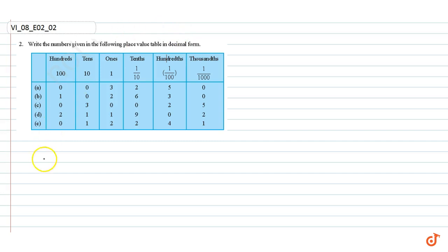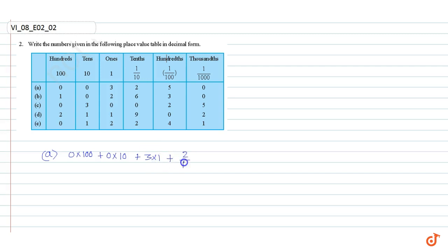Part A. Part A has 0 hundreds, so 0 × 100, plus 0 tens, so 0 × 10, plus 3 ones, so 3 × 1, plus 2 tens so 2 by 10, plus 5 hundreds so 5 by 100, plus 0 thousands so 0 by 1000.